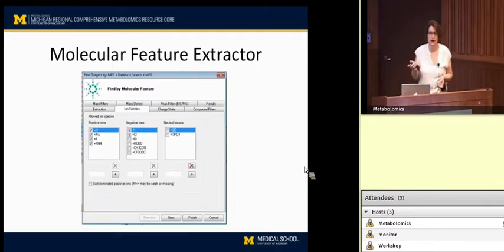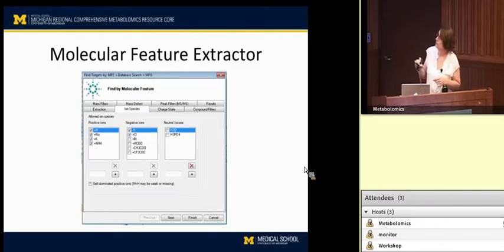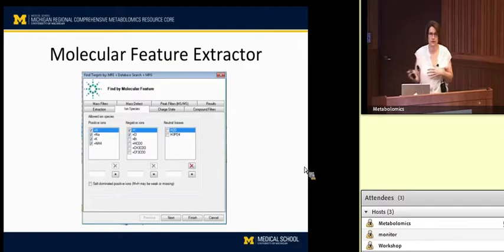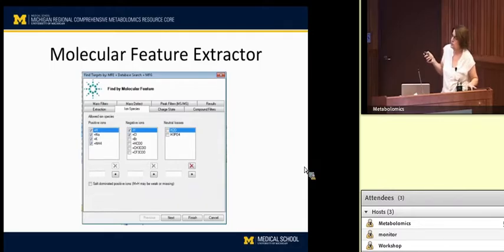Another approach would be to not do this and instead pick out all features separately, then go back and try to do correlation later to reduce the dataset through another means. But for now I'm going to talk about this as a possible basis for reducing the complexity of that spectrum.